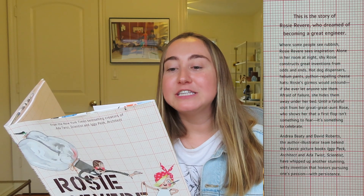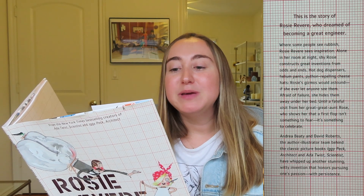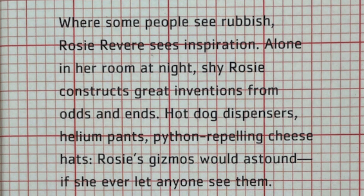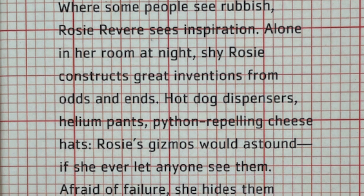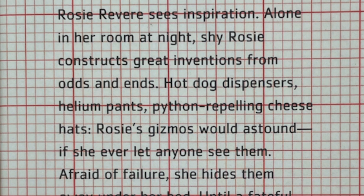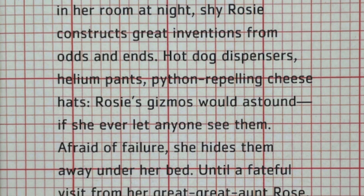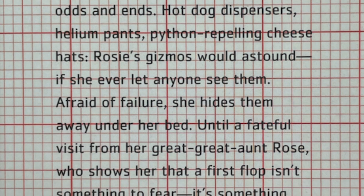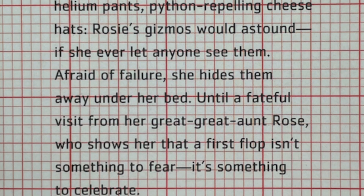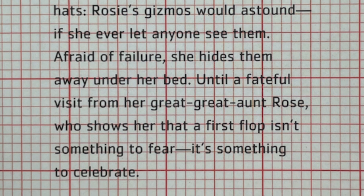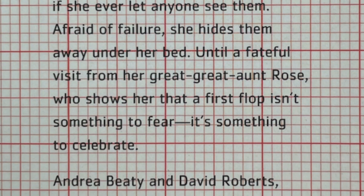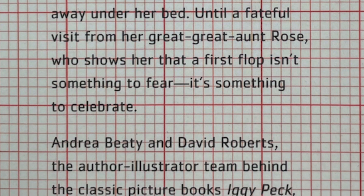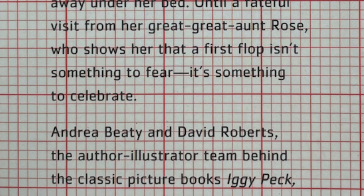This is the story of Rosie Revere, who dreamed of becoming a great engineer. Where some people see rubbish, Rosie sees inspiration. Alone in her room at night, shy Rosie constructs great inventions from odds and ends — hot dog dispensers, helium pants, python-repelling cheese hats. Her gizmos would astound if she ever let anyone see them. But afraid of failure, she hides them away under her bed, until a fateful visit from her great-great-aunt Rose, who shows her that a first flop isn't something to fear — it's something to celebrate.